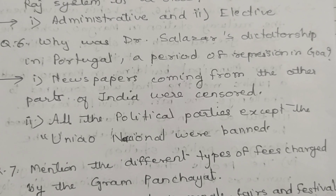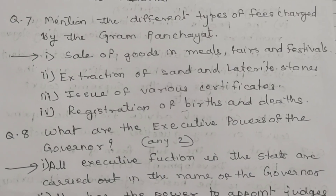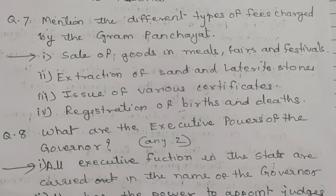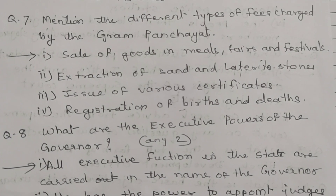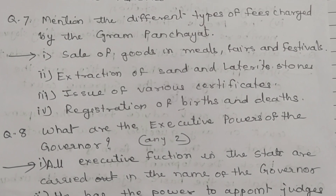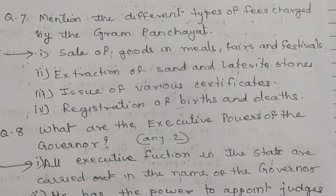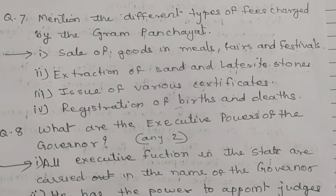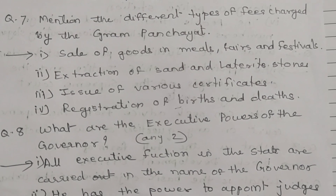Question number 7: Mention the different types of fees charged by the Gram Panchayat. Sale of goods in mills, fairs and festivals; extraction of sand and laterite stones; issue of various certificates; and registration of births and deaths.